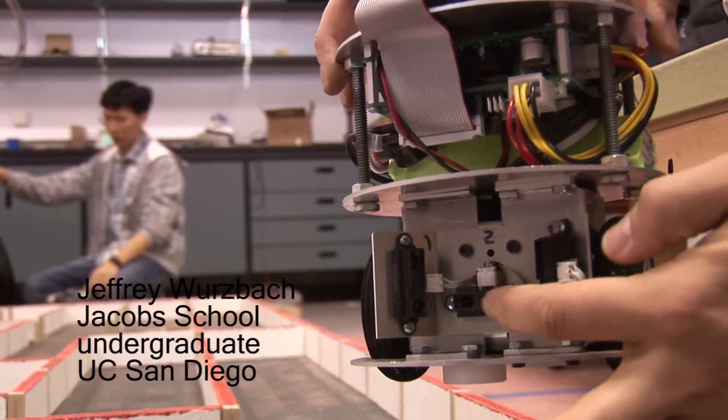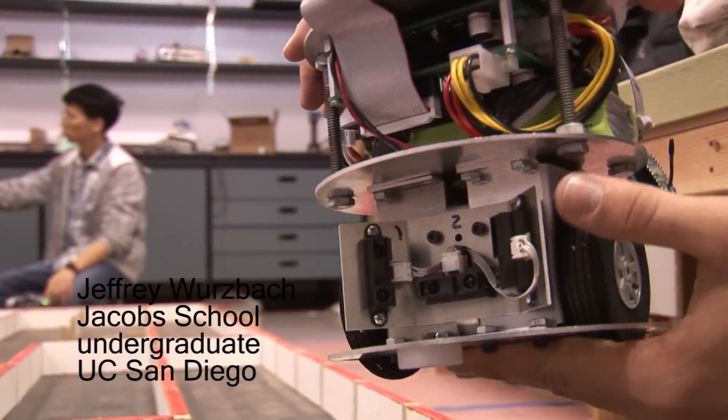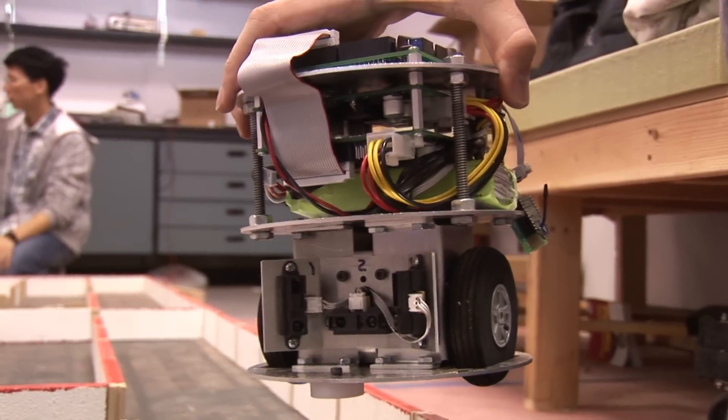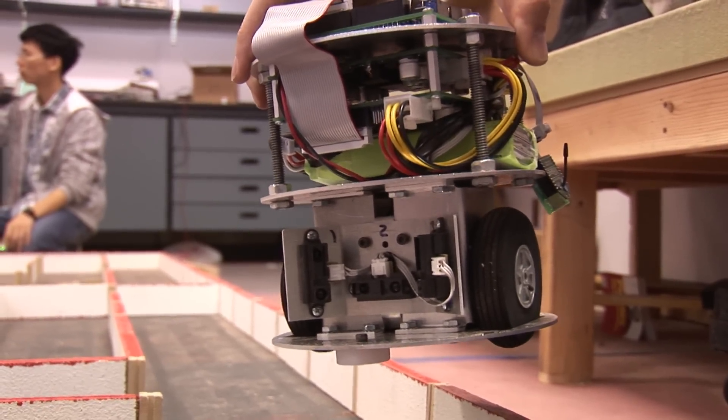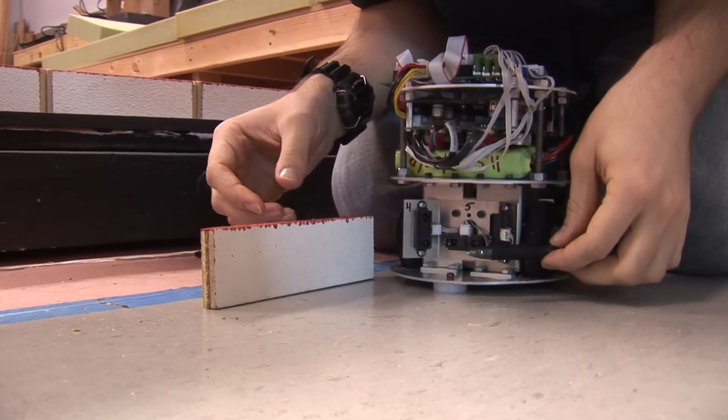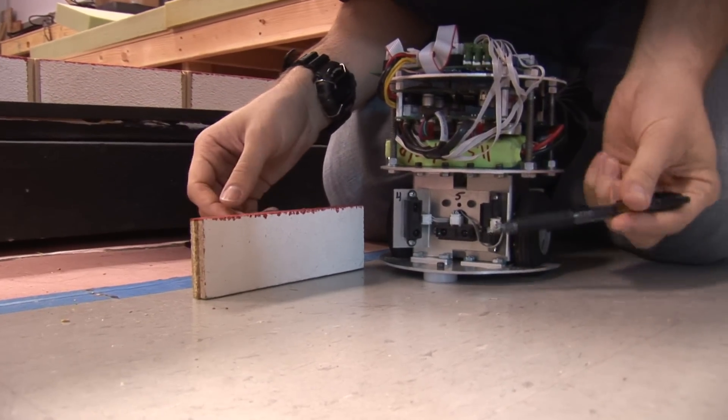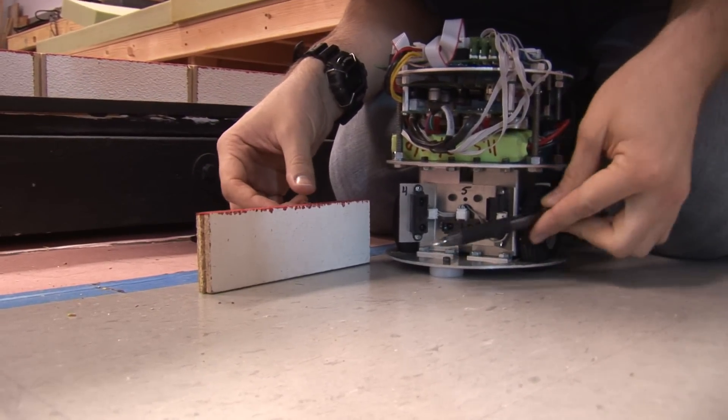And then down here we have distance sensors and these sensors basically are how the robot sees around the maze and basically detects all the walls. Coming out of this robot, say this sensor here, we have some light that fires here.